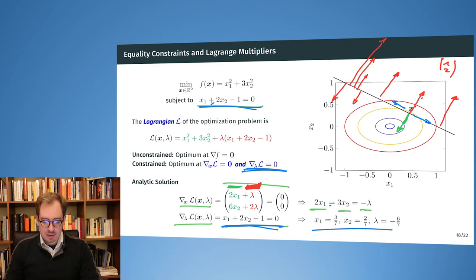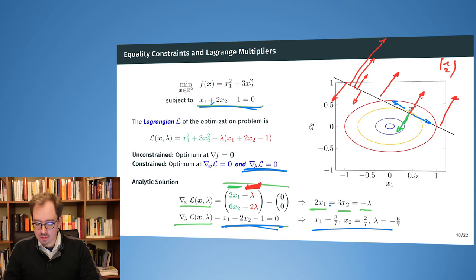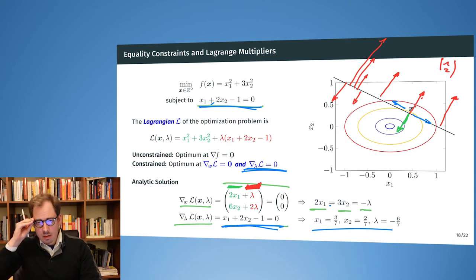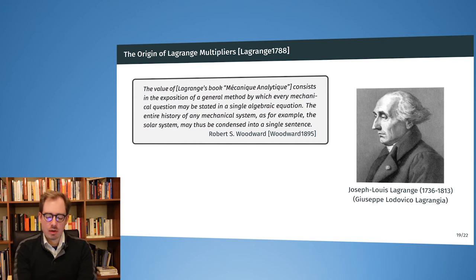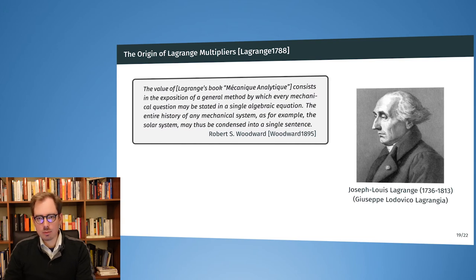This was quite a dense slide, but we will see a numerical example of that. The origins of the Lagrange multipliers were Joseph Louis Lagrange. He is not French — he is originally Italian from Turin, and he also worked in Germany and France, where he died.